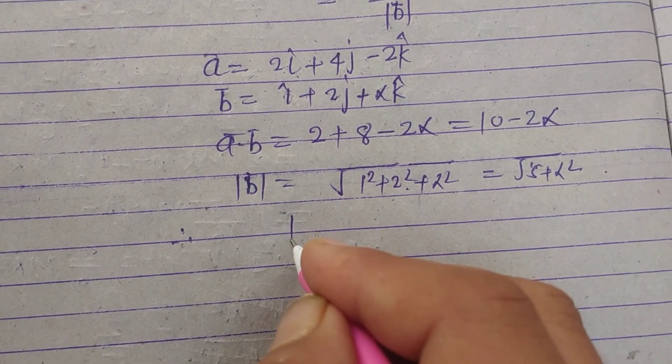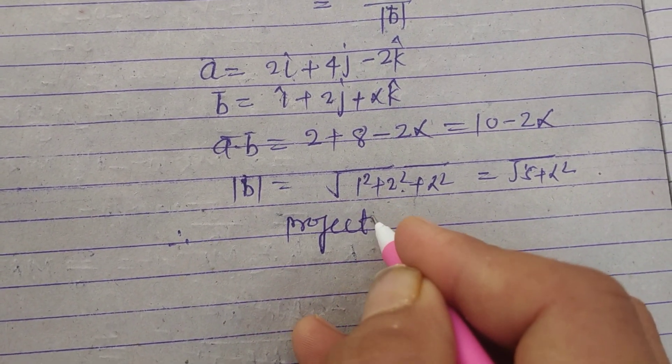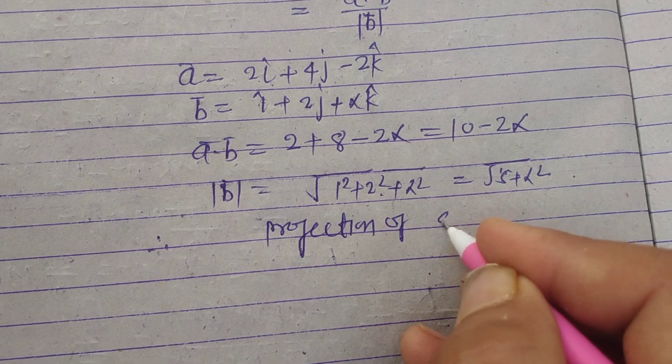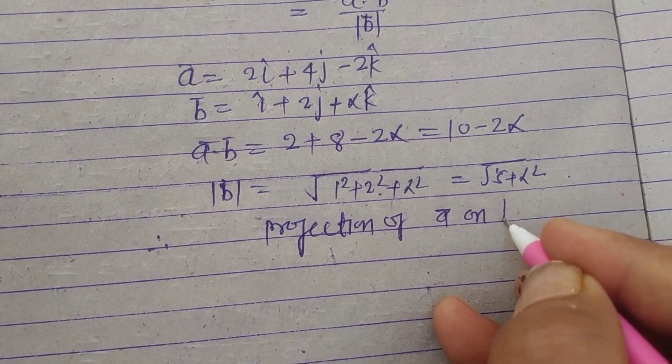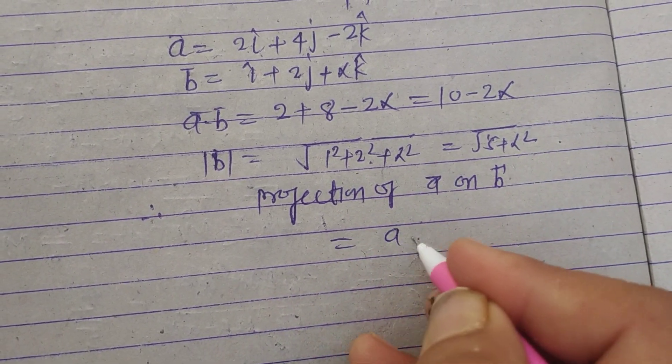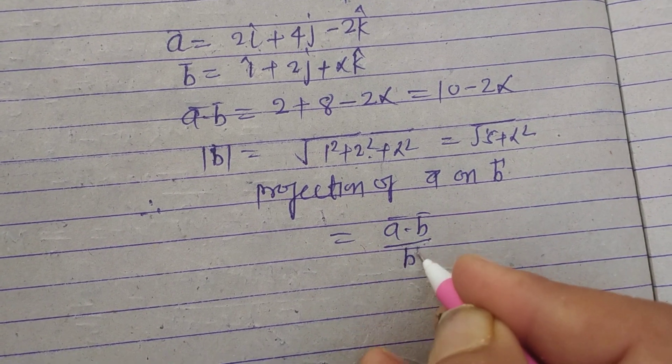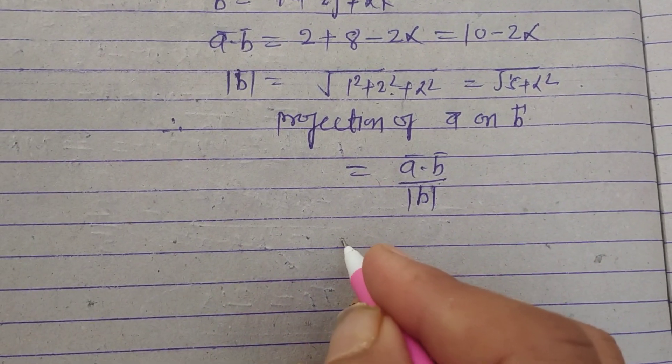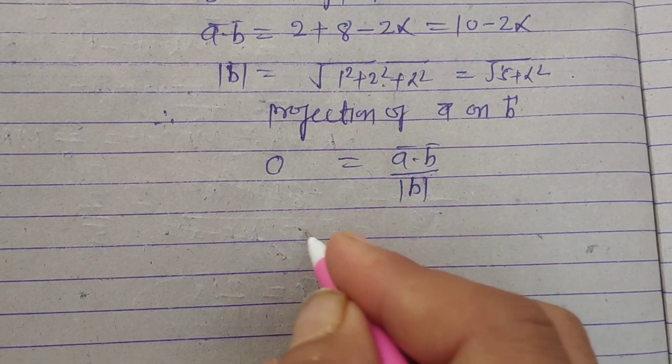Therefore projection of vector a on vector b is a dot b over modulus of b, and this is given to us as zero.